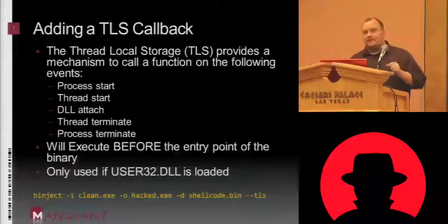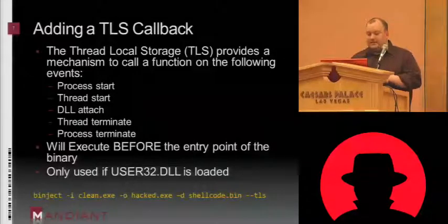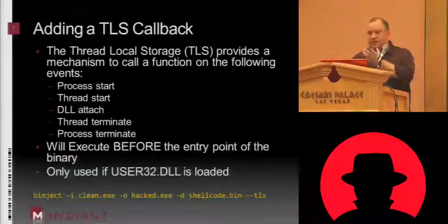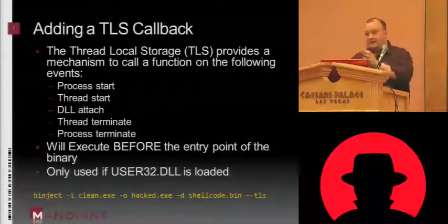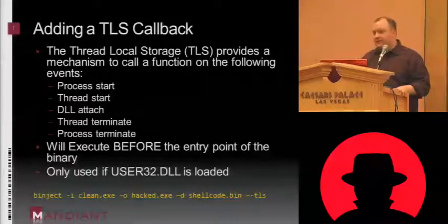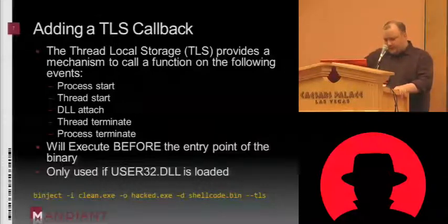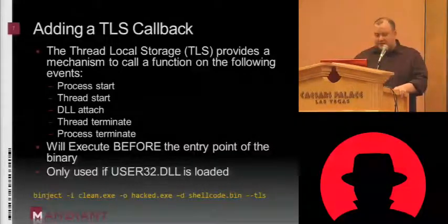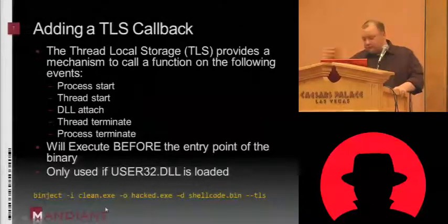So if you wanted to have some anti-VMware or anti-debugger detection, TLS callbacks are a pretty novel place to put that, because when you open it up in OllyDbg with default settings, the TLS callback has already executed — it's not automatically going to pause at that location. You can configure it to pause, but it's not the default behavior. And this is, of course, if user32.dll is loaded — something in the user32.dll call chain actually forces these things to be loaded.